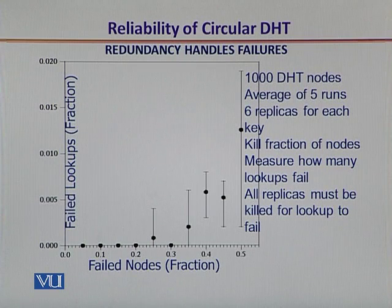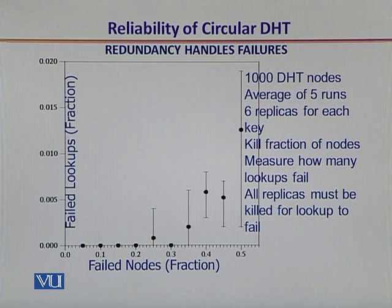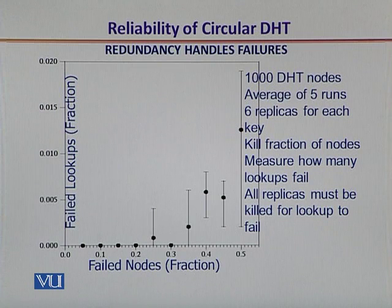On the graph, the x-axis shows the number of failing nodes increasing as a percentage or fraction of the total number of nodes, and on the y-axis it is the fraction of the failed lookups. As you can see, in a distributed hash table configuration with redundancy, it is not a linear trend.